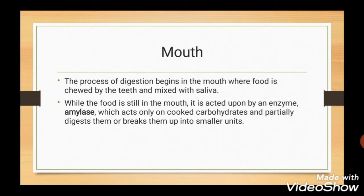Digestion begins in the mouth. Here, food is chewed with the help of teeth and mixed with saliva, which is a secretion of the salivary glands. Saliva contains an enzyme, amylase, which acts on cooked carbohydrates, partially digesting them and breaking them into smaller units.